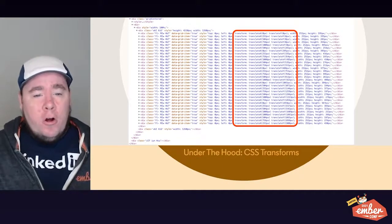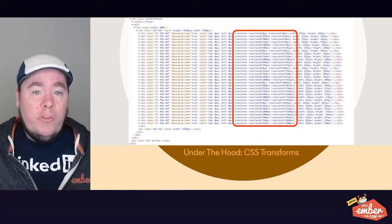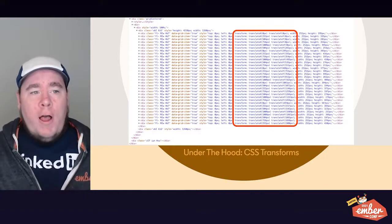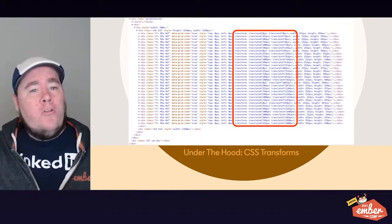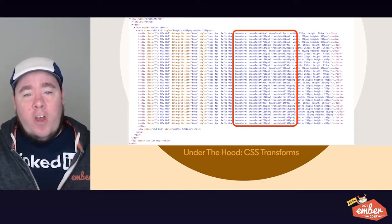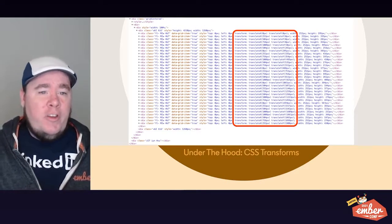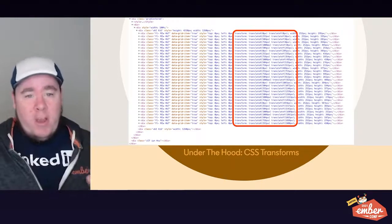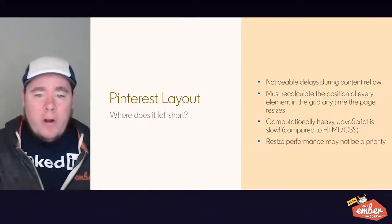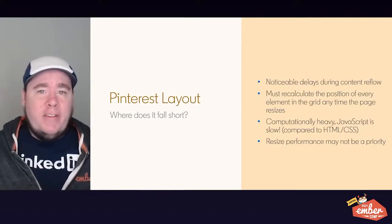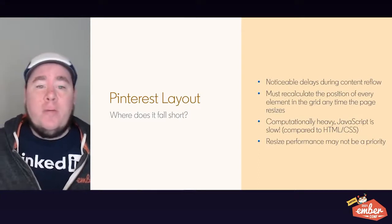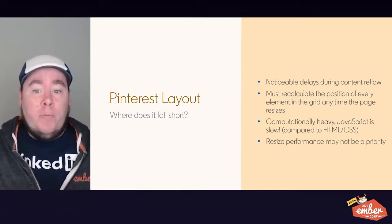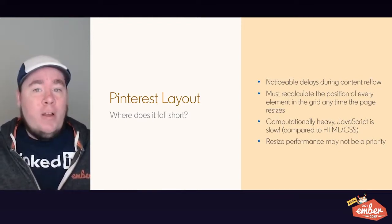Pinterest does their grid layout via explicit CSS transforms. They look at the height and width of each item in their grid and the overall dimensions of the container, then use JavaScript to calculate the exact position each item needs to be, setting explicit transforms to translate each item by a number of pixels along the X and Y axis. Where this comes up short is noticeable delays when reflowing content, since they must recalculate the position of every element every time the page resizes. This is computationally heavy because JavaScript is slow compared to native HTML and CSS features.